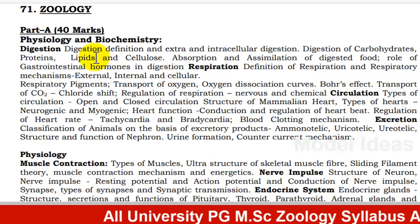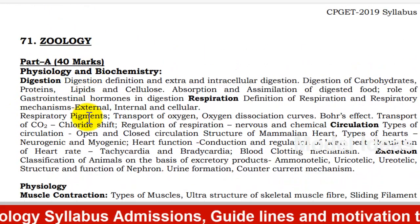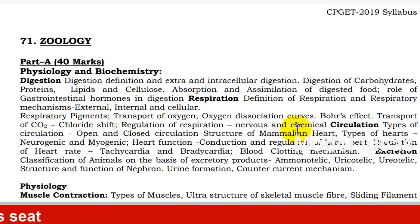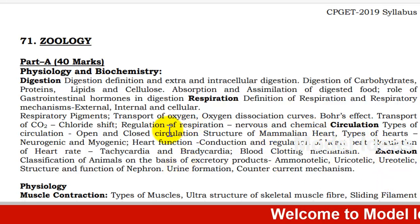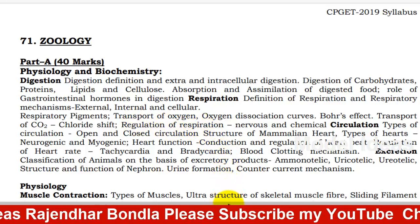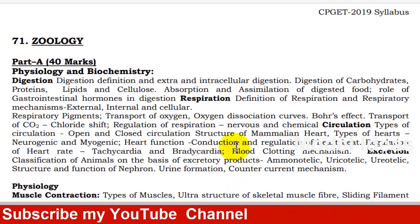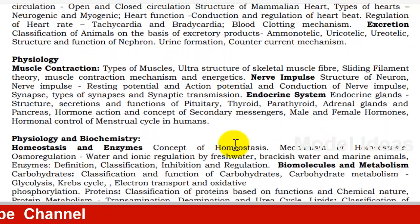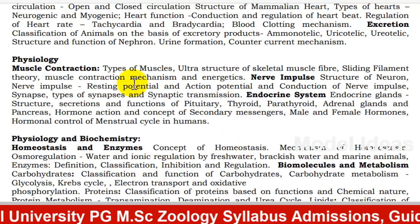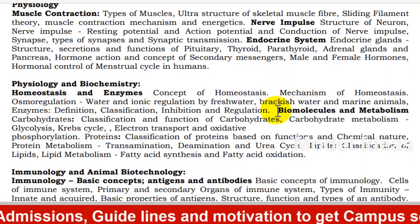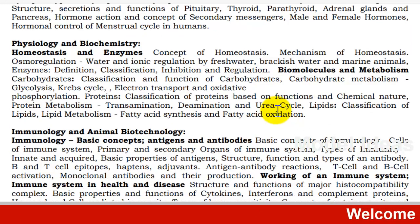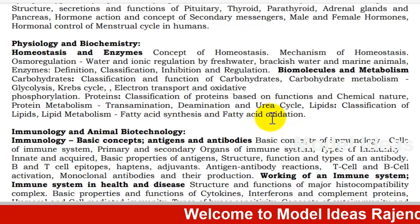Physiology and Biochemistry — this is the first topic. Topics include digestion, respiration, circulation, excretion. The syllabus covers these across first, second, and third year. Physiology topics: muscle contractions, nerve impulse, endocrine system. Biochemistry topics: homeostasis, enzymes, biomolecules and metabolism. These form the 40 mark syllabus for Part A.